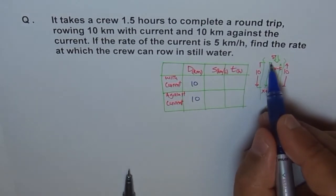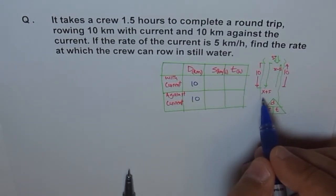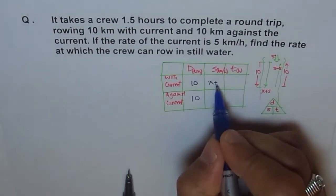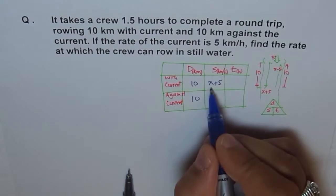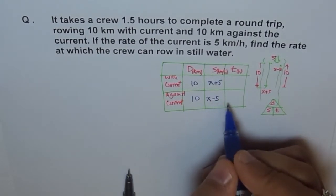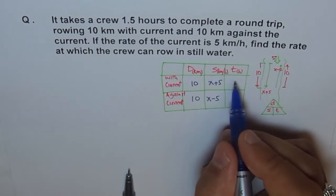And how about the speed? With current, you saw your speed in still water is X. So, with current, it will be X plus 5, correct? Against current, still water speed is X. And against, it will be X minus 5, correct?